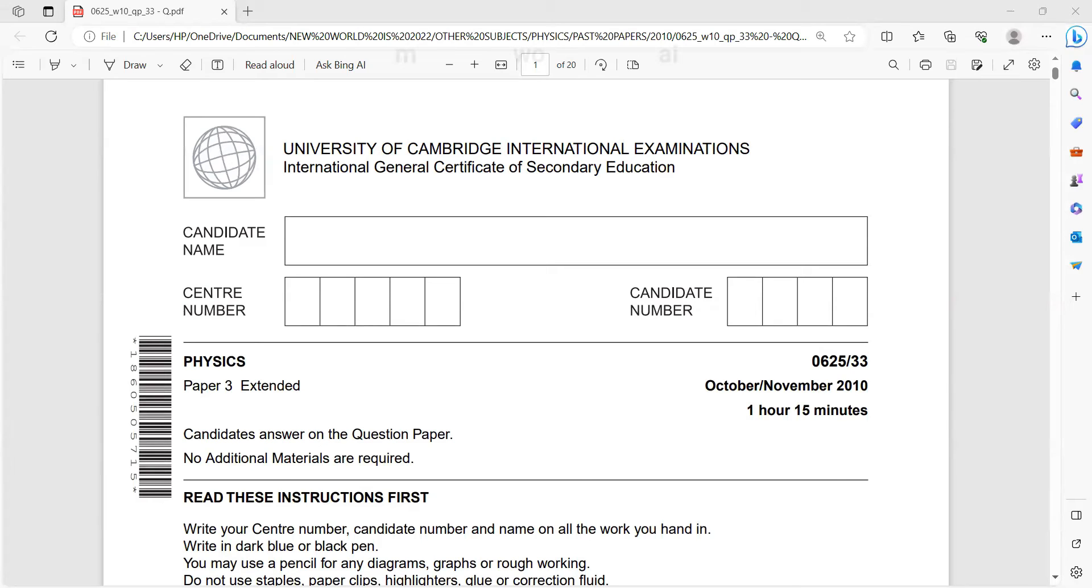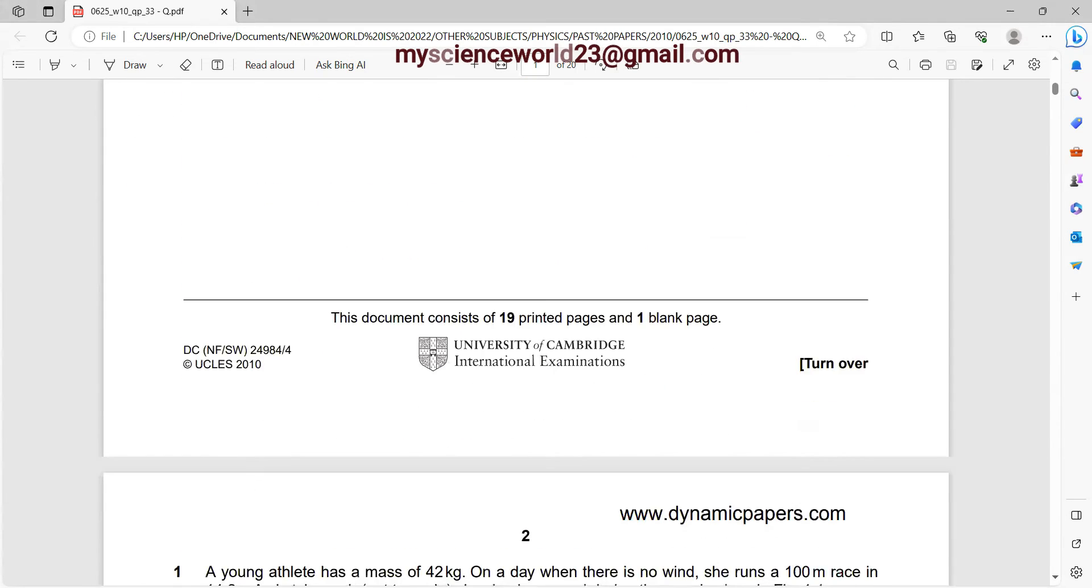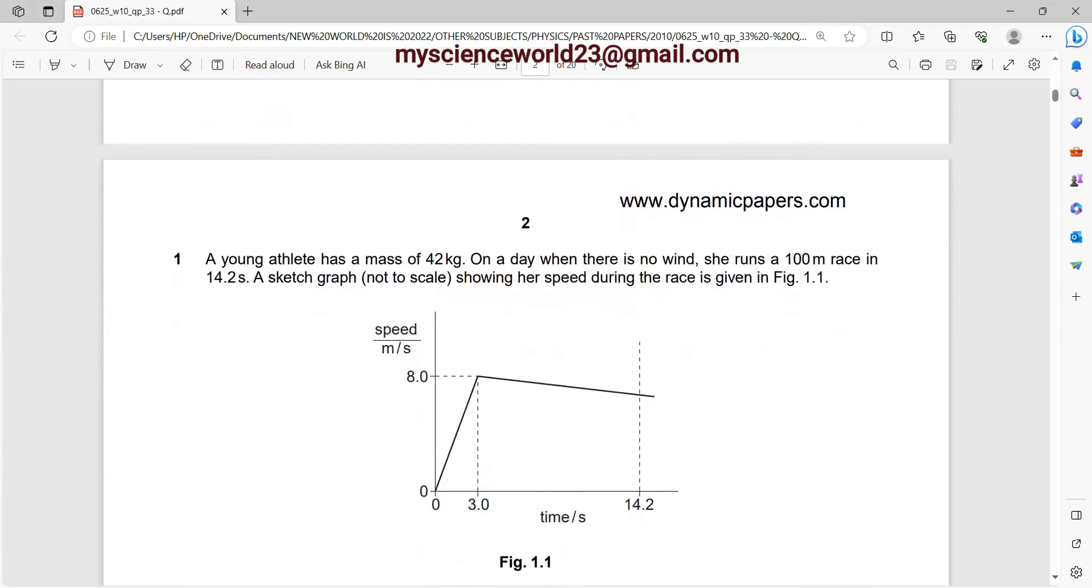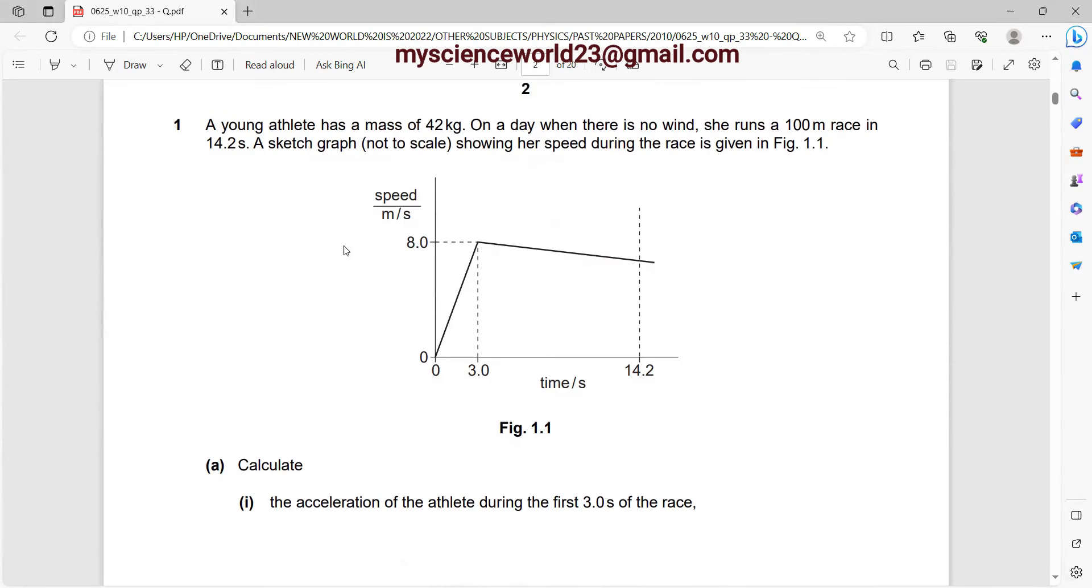Before us is an IGCSE physics paper, the year October or November 2010, and we shall be looking at just the first question. So it reads, a young athlete has a mass of 42 kg on a day when there is no wind. She runs a 100-meter race in 14.2 seconds. The sketch graph, which is not drawn to scale, shows her speed during the race.